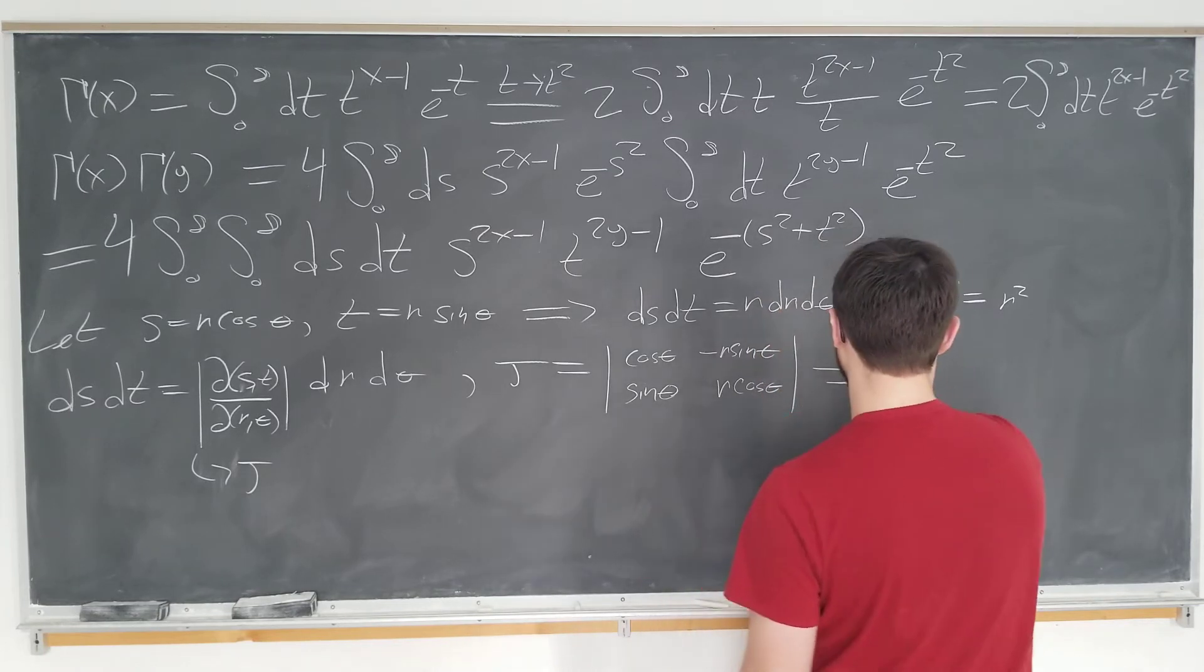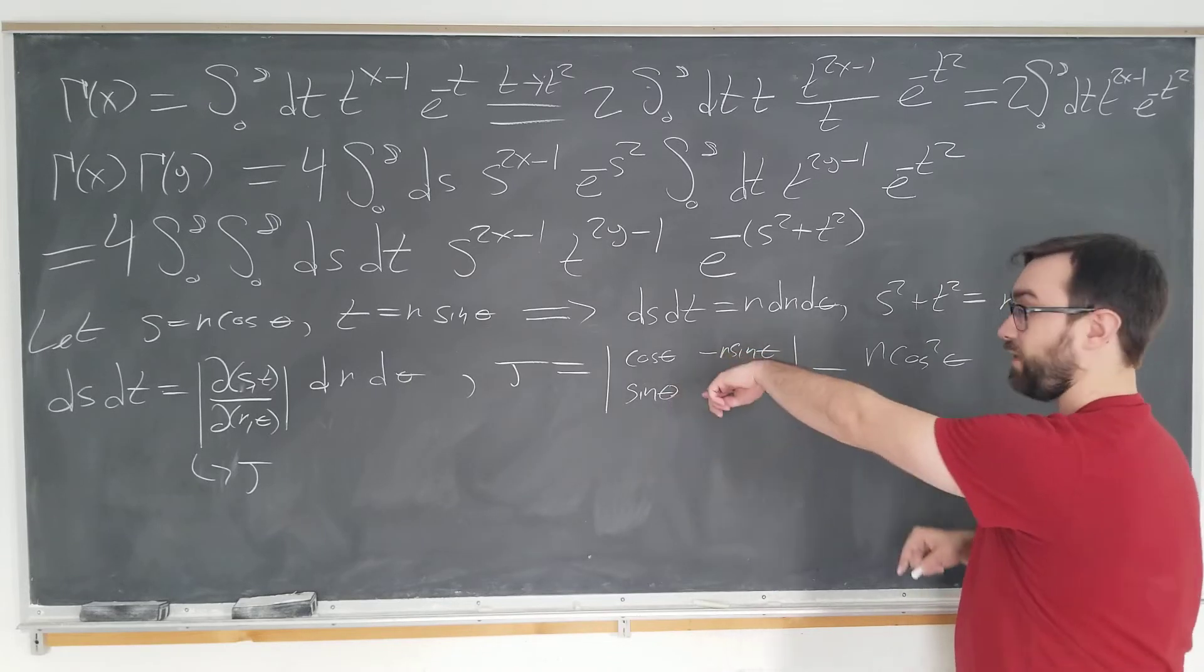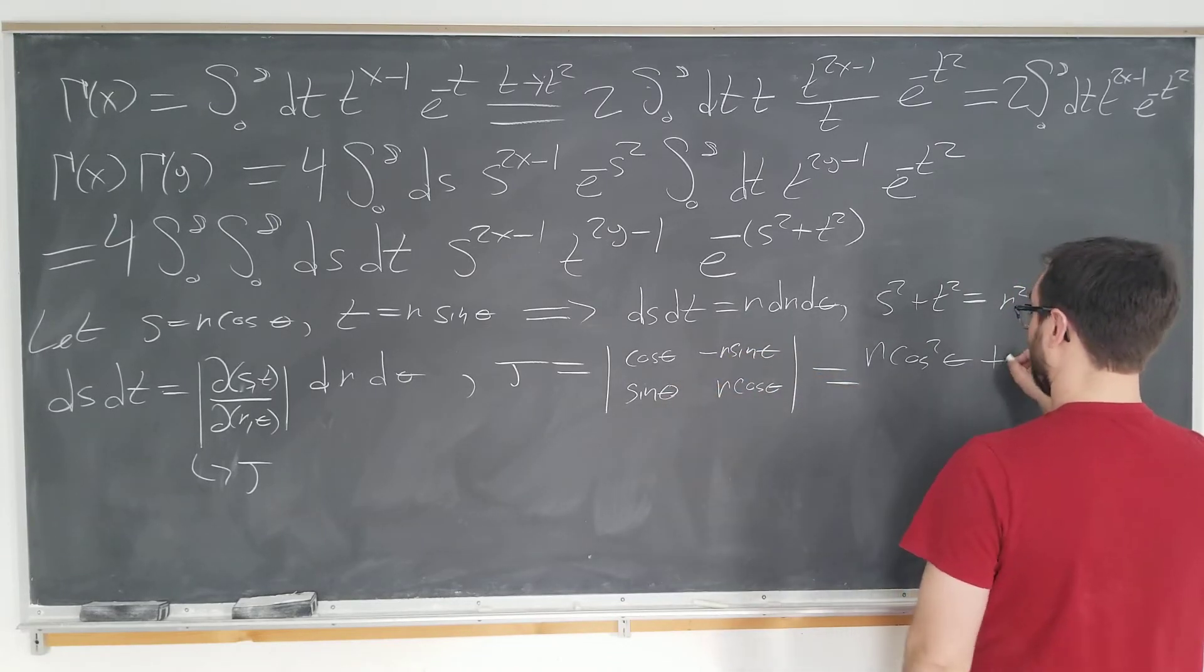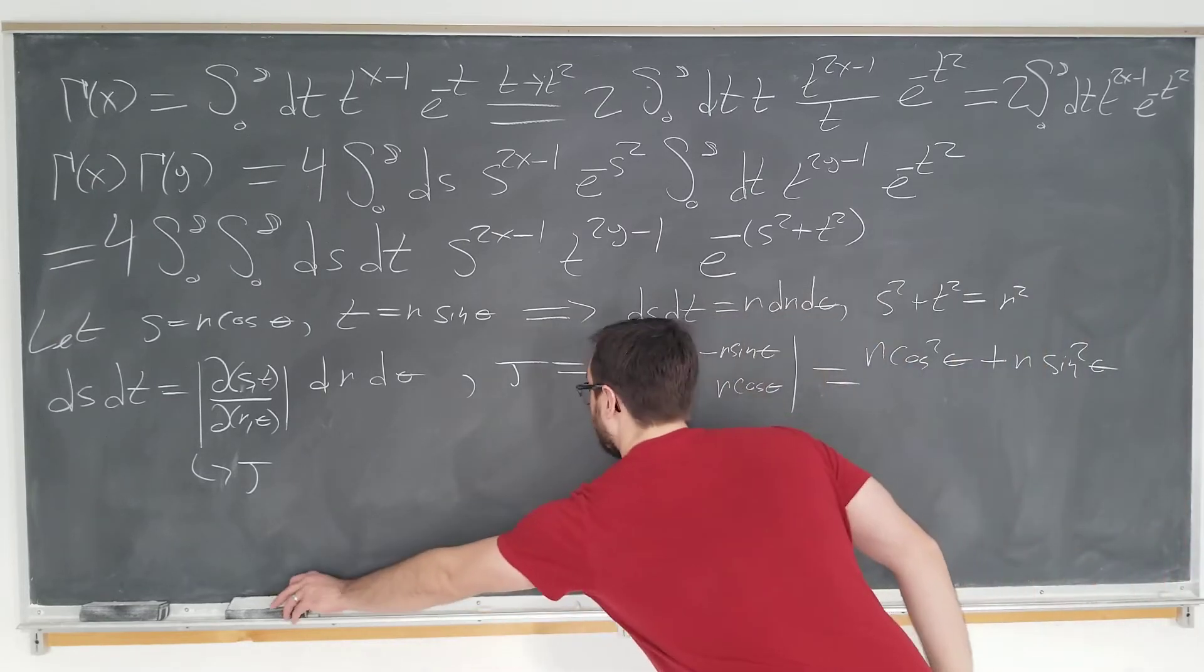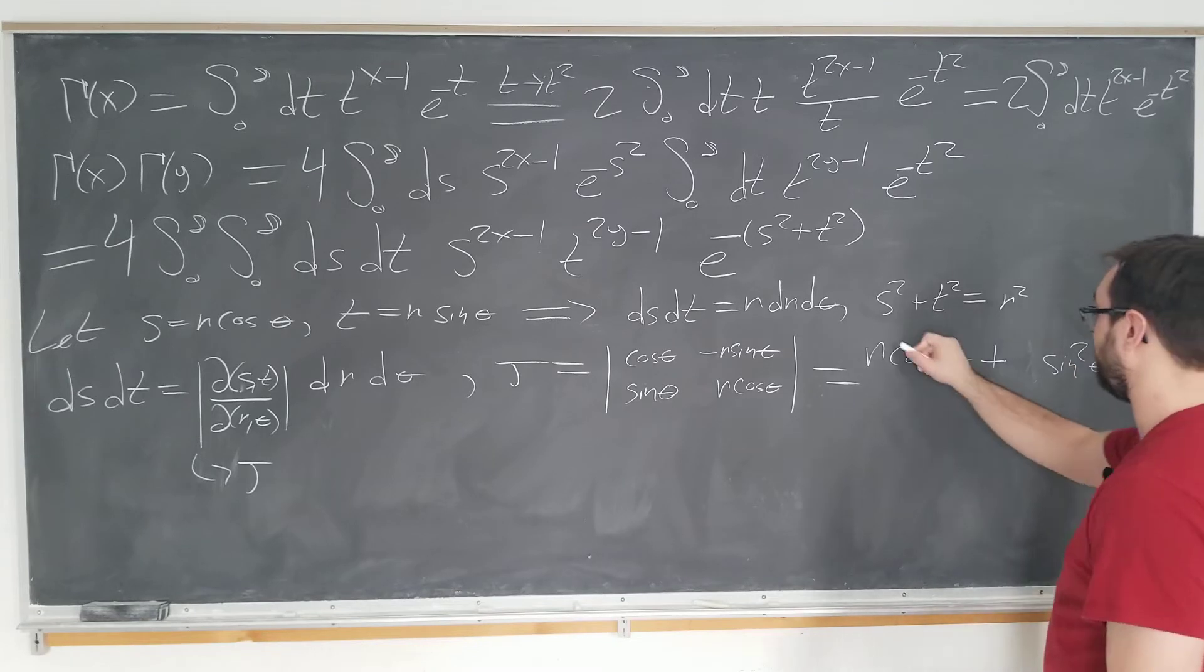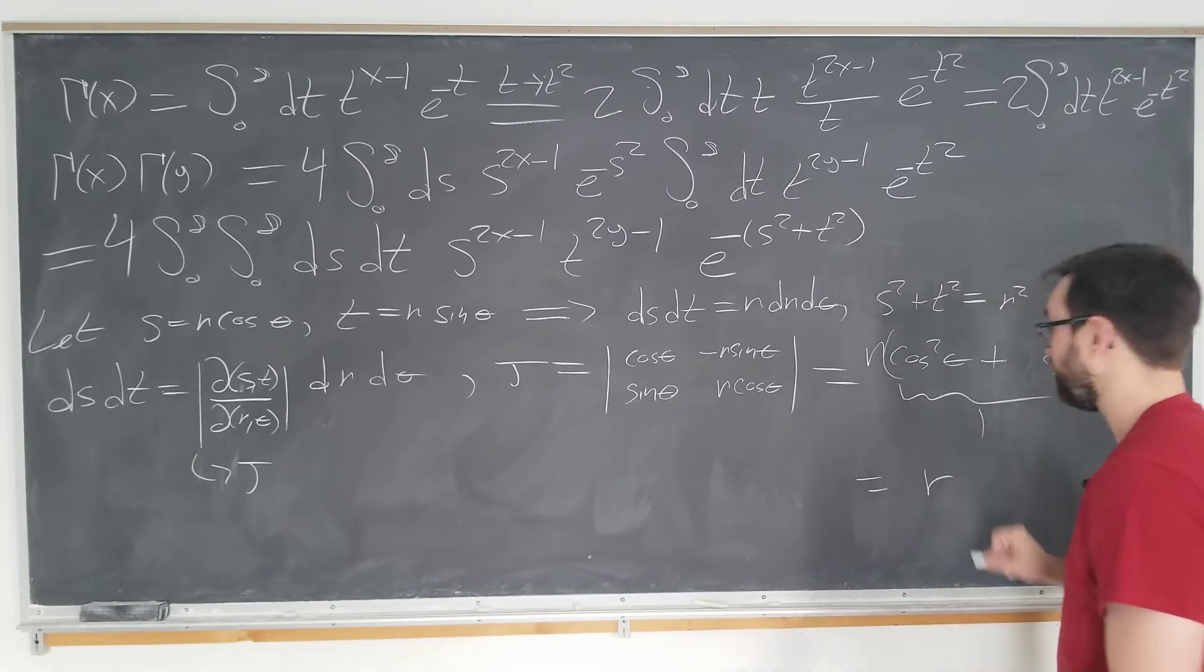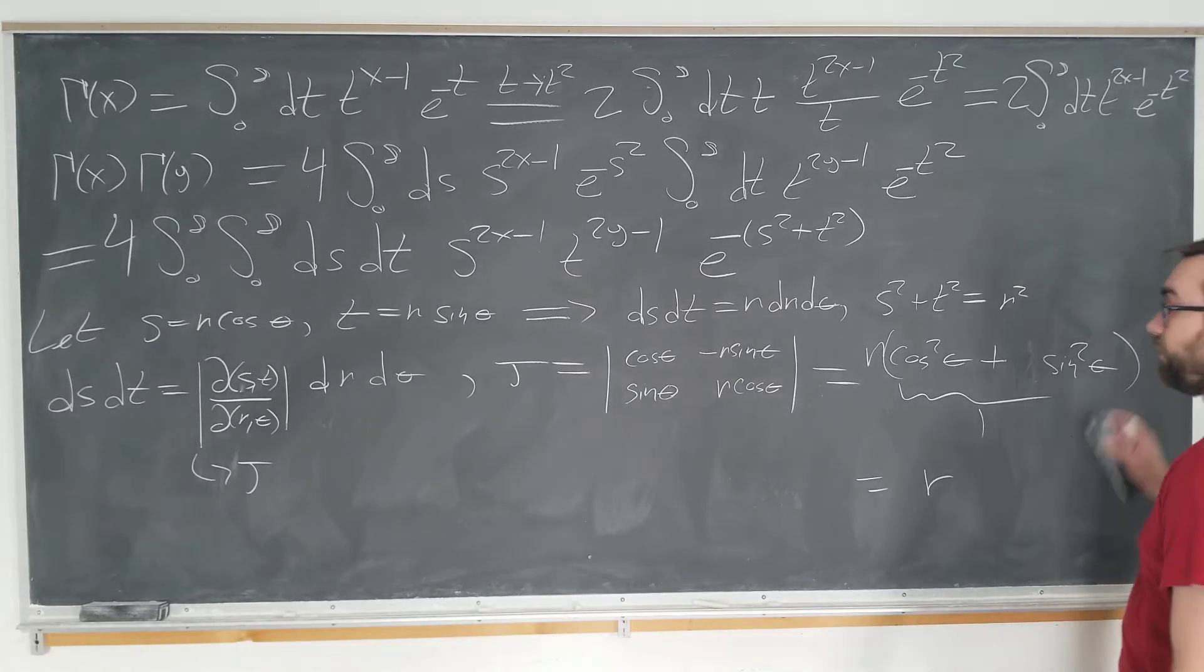We take the determinant here, r cosine squared theta minus this, minus minus becomes plus, plus r sine squared theta. And we see that we can just take this r and put it here. And this is one. So our j is indeed r, and we're good to go.